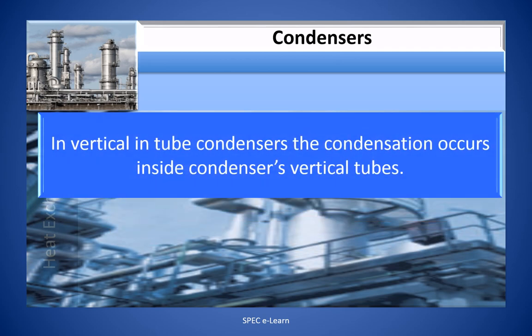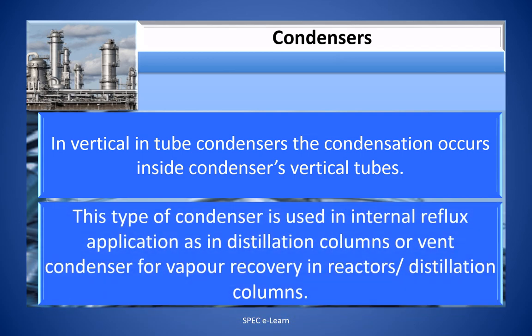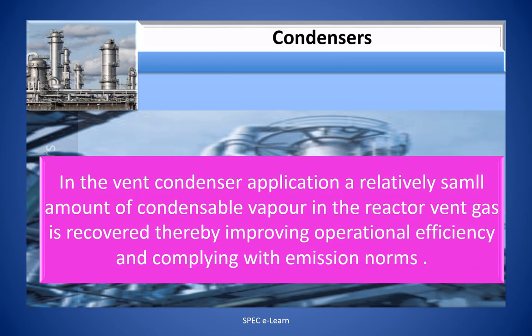In vertical in-tube condensers, the condensation occurs inside the condenser's vertical tubes. This type is used in internal reflux applications such as distillation columns, or as a vent condenser for vapor recovery in reactors or distillation columns. In the vent condenser application, a relatively small amount of condensable vapor in the reactor vent gas is recovered, thereby improving operational efficiency and complying with emission norms.